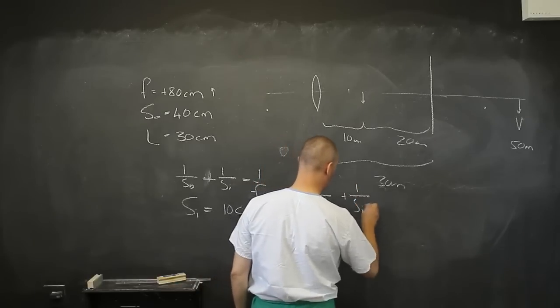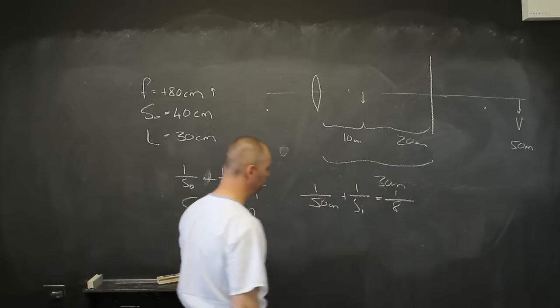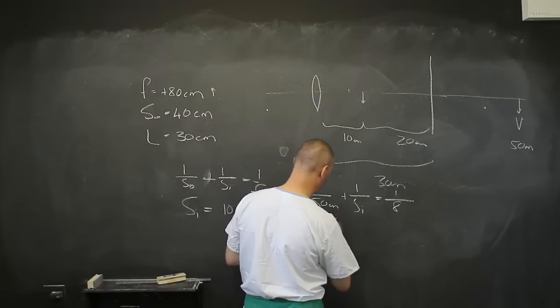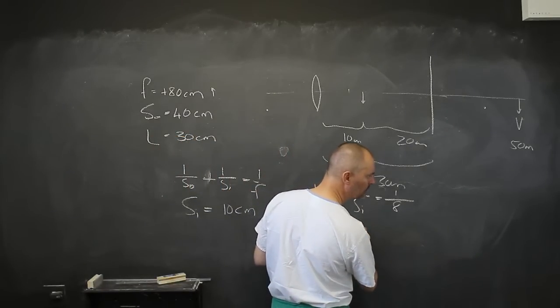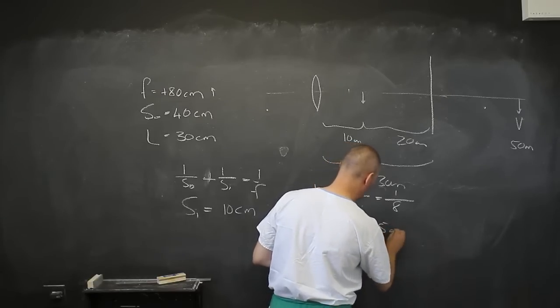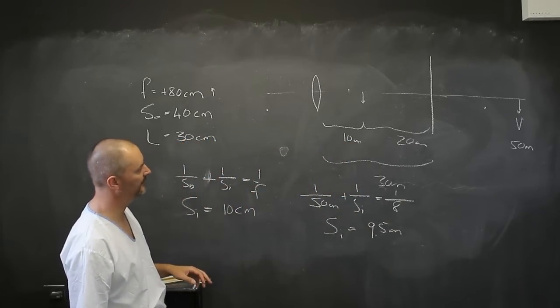Plus 1 over SI is going to be 1 over—it still has a focal distance of 8 centimeters. And that will give me an SI of, I think I got 9.5, somewhere there about 9.5 centimeters.